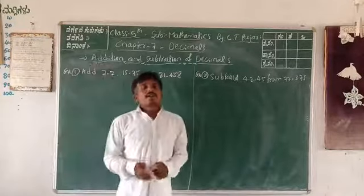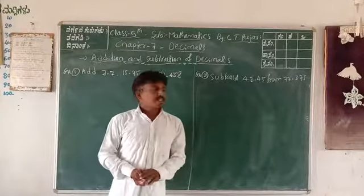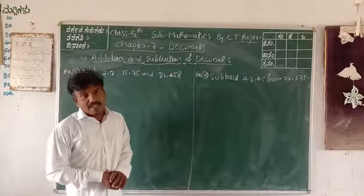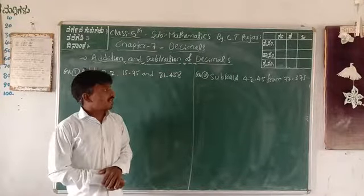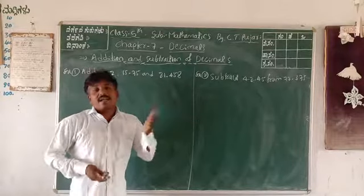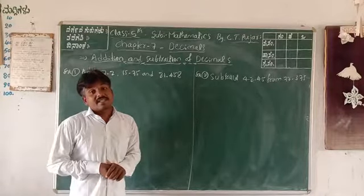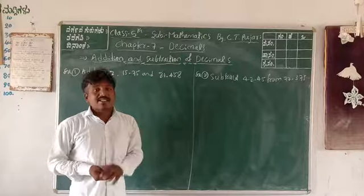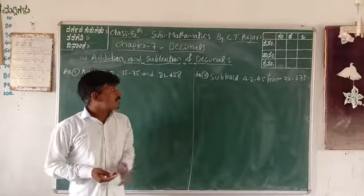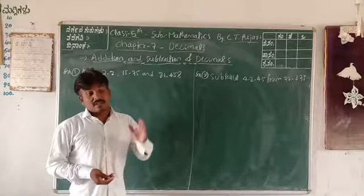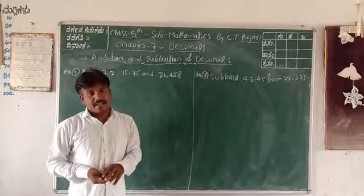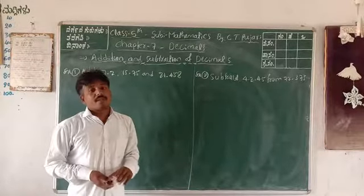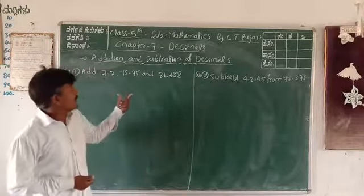Hi students, good morning. In your fifth standard, chapter number seven is Decimals. In your previous class you learned about decimals — the revision of decimals, like decimals, unlike decimals, ascending order, descending order, and comparing decimal numbers.